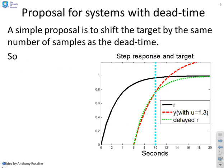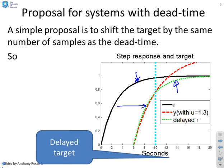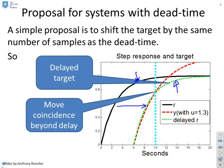So a simple proposal might be to shift the target by the same number of samples as the dead time. So you see what I've done here is I've taken this black target and I've just shifted it to the right to give myself this green target. So you could say, would it make more sense just to use a delayed target? So that's what I've got here, and then move the coincidence beyond the delay.